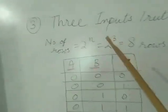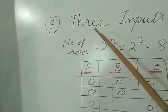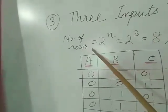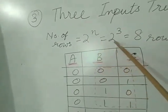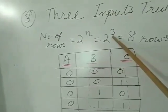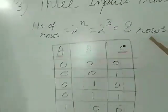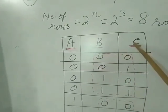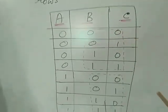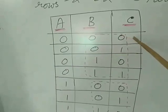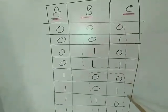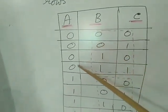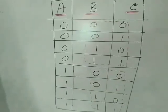Next is creating a truth table using 3 inputs. For 3 inputs, the number of rows using the formula 2 to the power 3 equals 8 rows. The inputs are A, B, and C. The truth table looks like this — the same sequence is repeated 2 times, with 4 zeros followed by 4 ones.